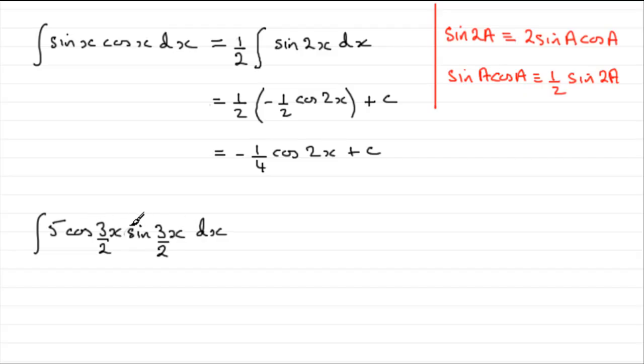So, although this is written back to front, as opposed to this version up here, it obviously is the same thing. We can think of this as five times the integral of cos 3x over 2, sine 3x over 2, where 3x over 2 is this a.